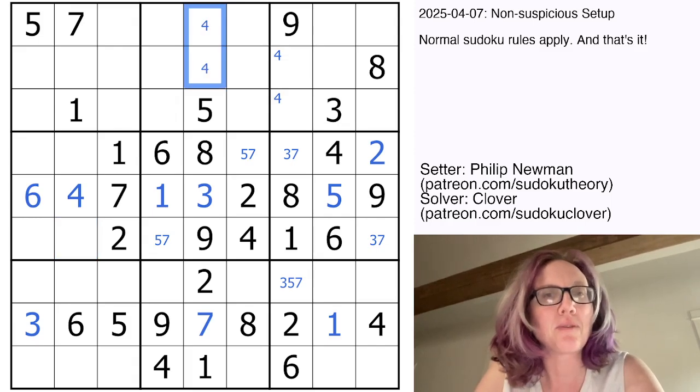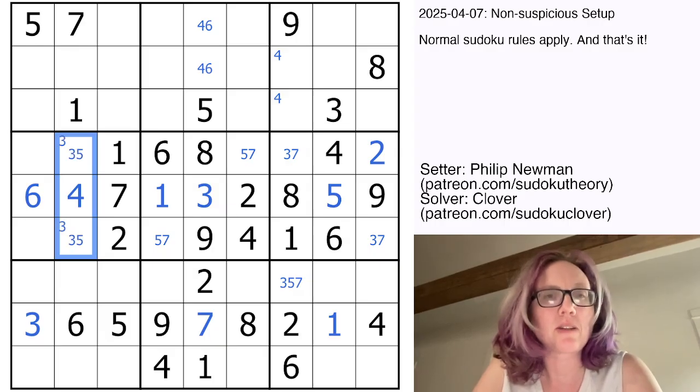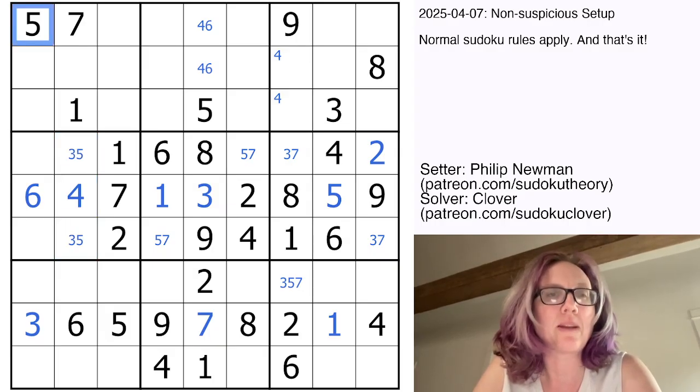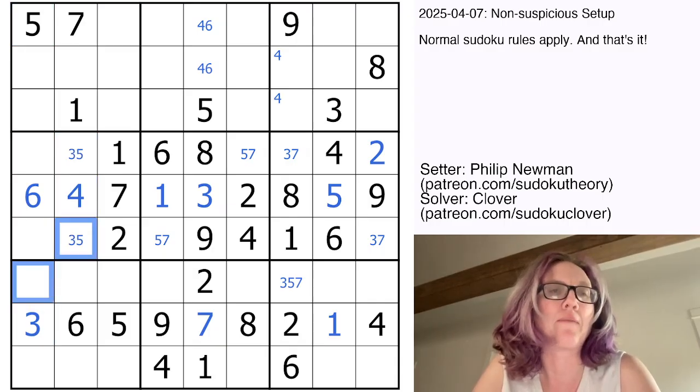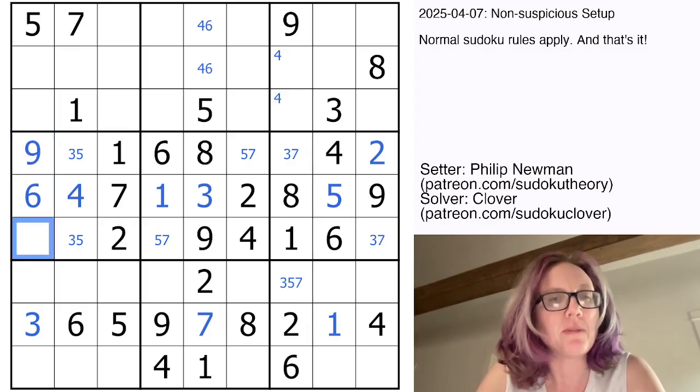In this column, I need a 4 and a 6. I can just mark those. I do need a 3 here. Actually, this is going to be a 3, 5 pair, because I have 3 and 5 here. So the only positions for 3 and 5 in the region are in these two spots. These are going to be 8 and 9 to finish off my region.